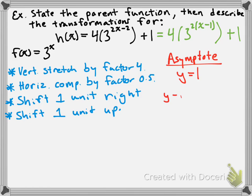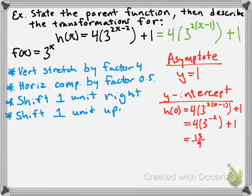For the y-intercept, since we've added transformations, we can't just take the a value — we have to substitute 0 in for x. So we're finding h of 0: that's 4 times 3 to the power of 2 times 0 minus 1, plus 1. Simplifying, we get 4 times 3 to the power of negative 2, plus 1, which gives us 13 over 9. So our y-intercept is at 13 over 9.